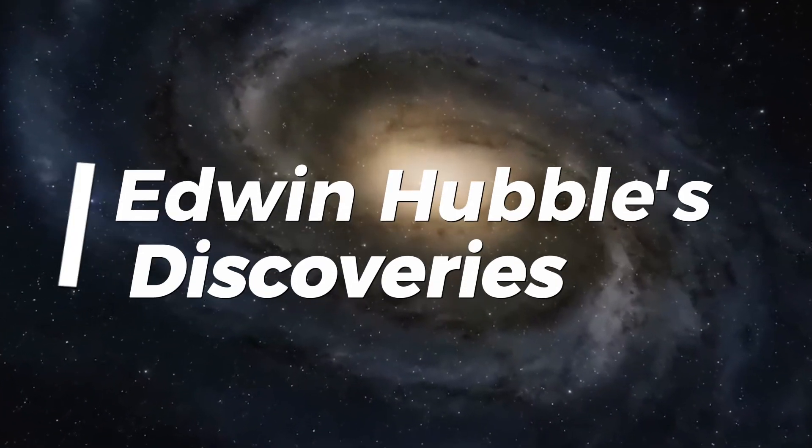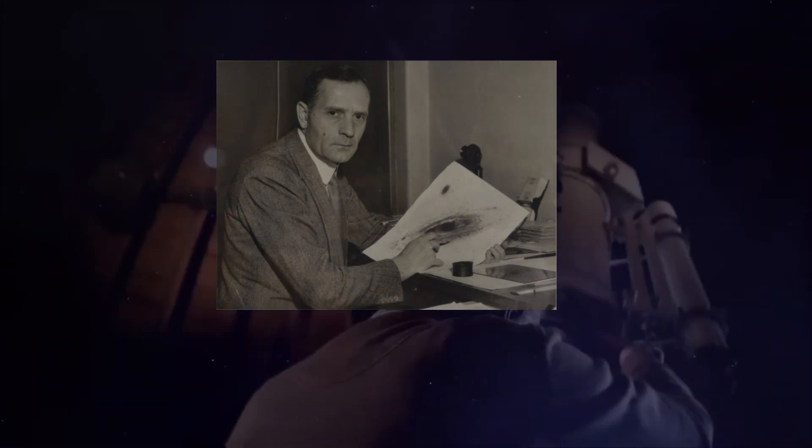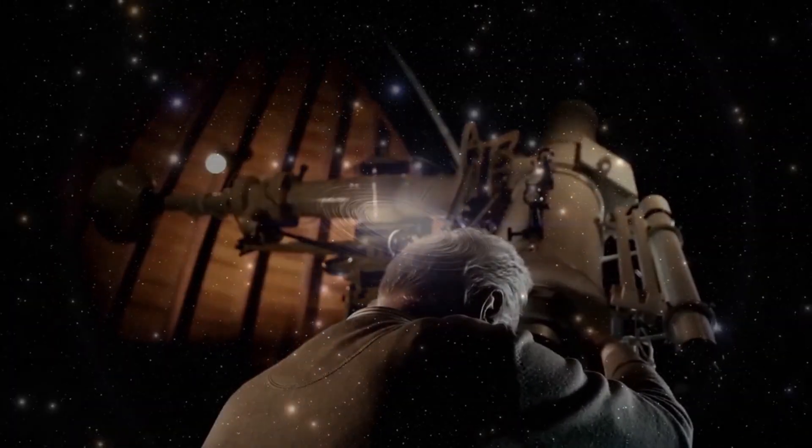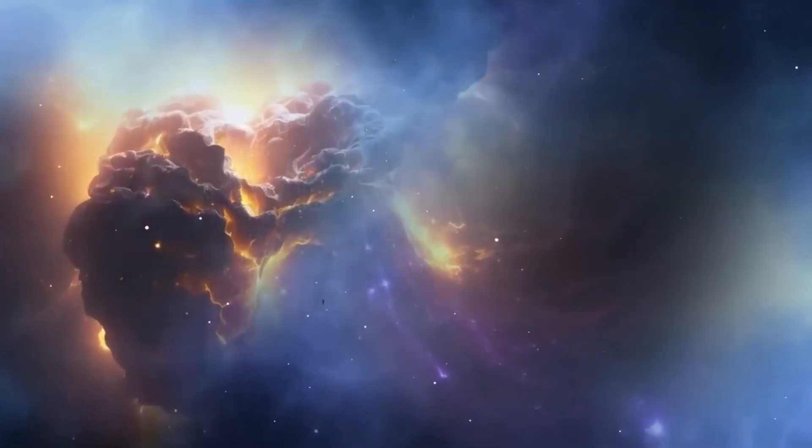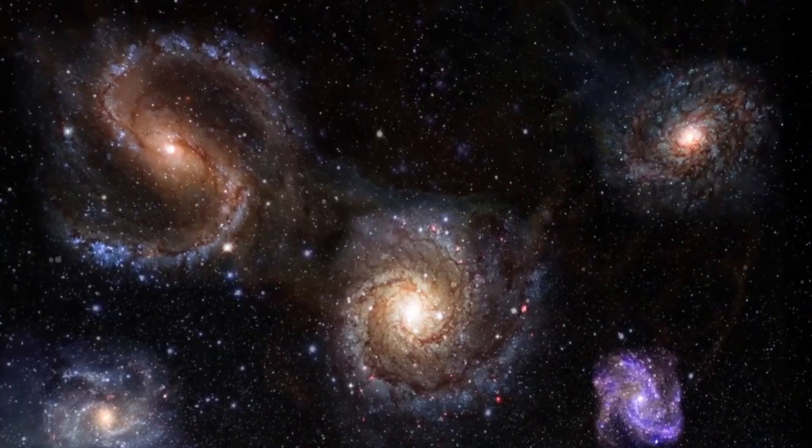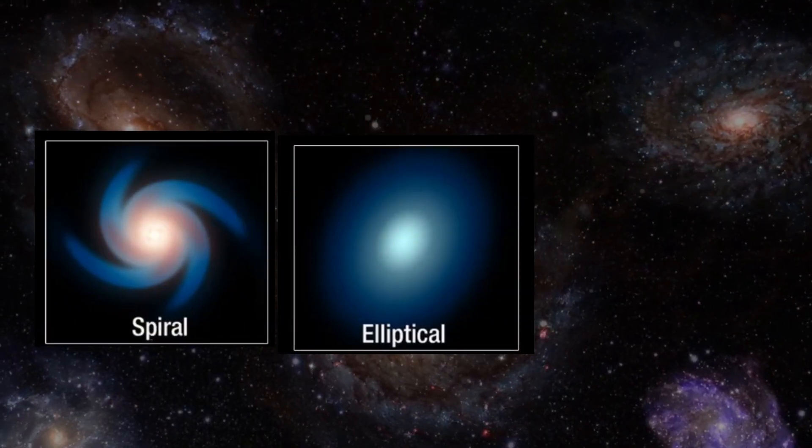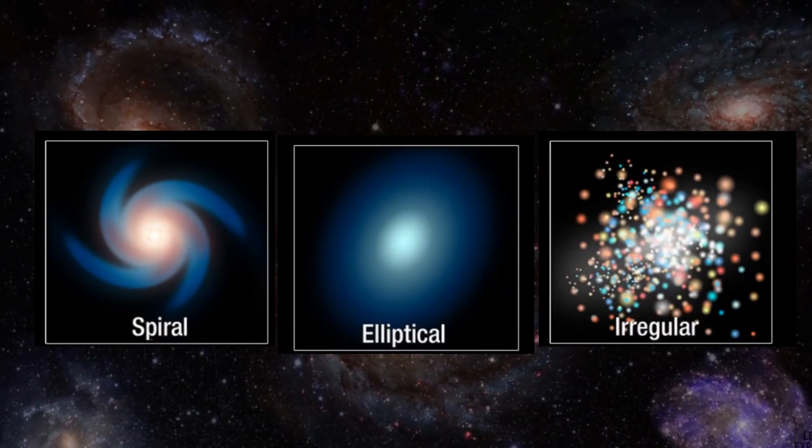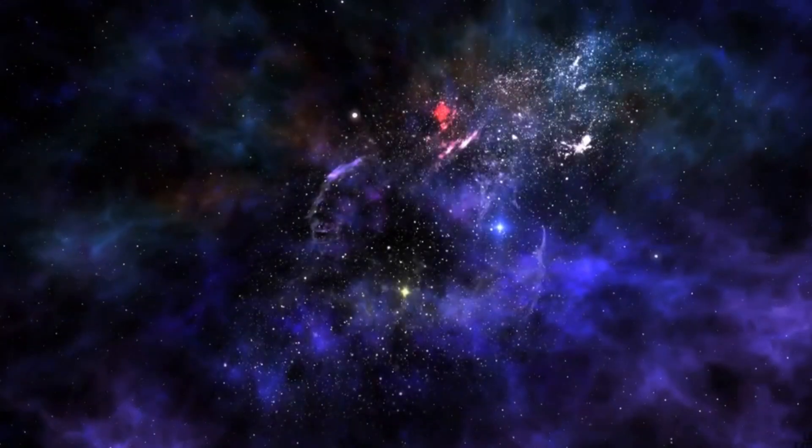Our modern grasp of the scale and expansion of the universe traces back to one pioneer, Edwin Hubble. In the 1920s, Hubble proved that galaxies like Andromeda were separate systems far beyond the Milky Way. This expanded our cosmic perspective exponentially. Hubble also classified galaxies into spirals, ellipticals, and irregulars based on their shapes. He discovered the more distant a galaxy, the faster it recedes, a relationship called Hubble's Law.